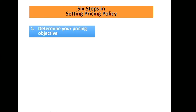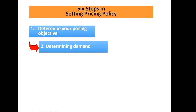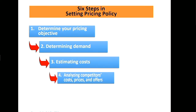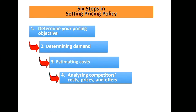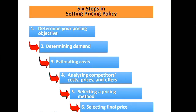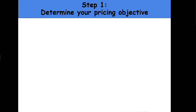The first step is thinking about your pricing objectives. The second is getting into the idea of demand — how do you determine and forecast demand? The third is estimating cost. Then we look at how we analyze competitors' costs, prices, and other offers — how we work versus competitors. The fifth is selecting a pricing method, and then how do you get to the final price?